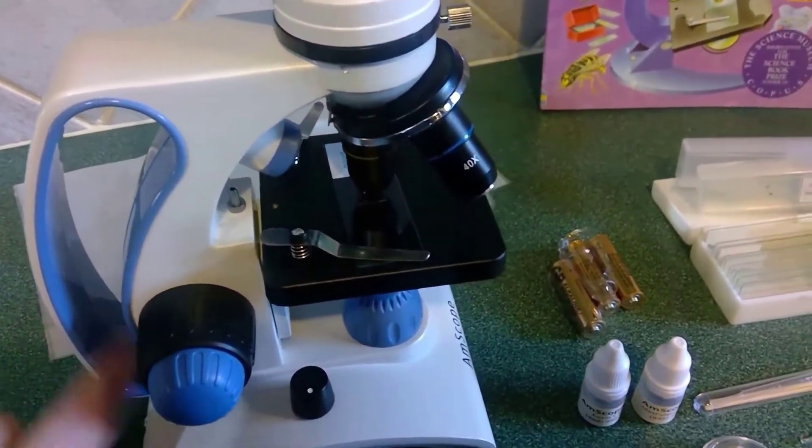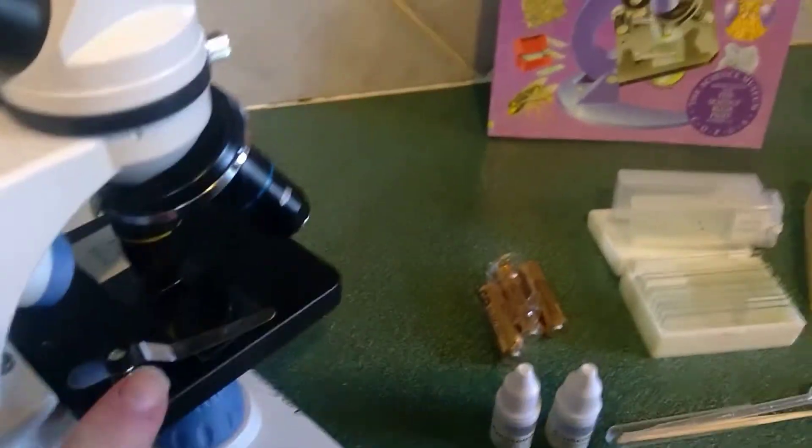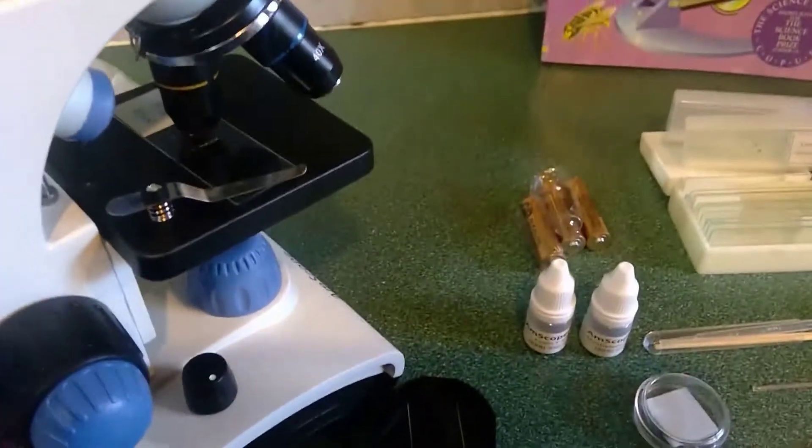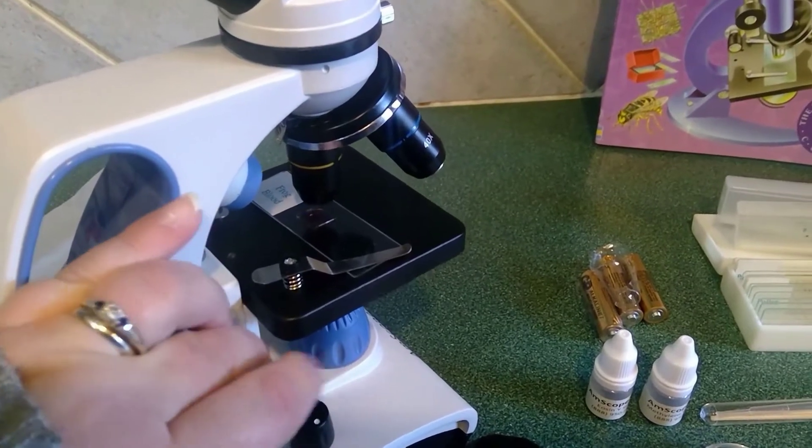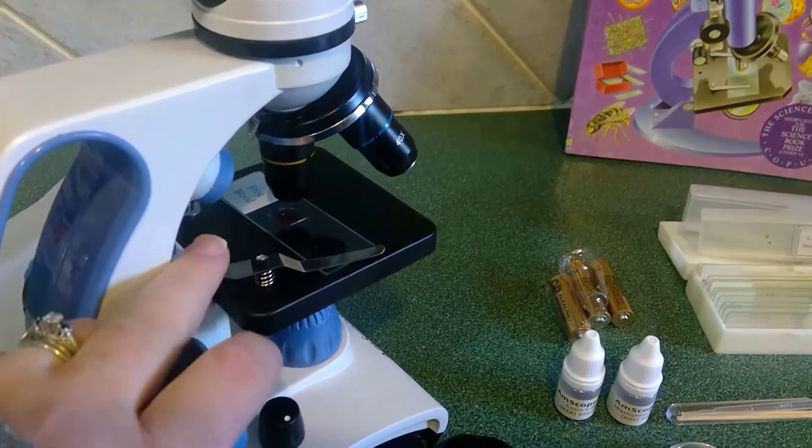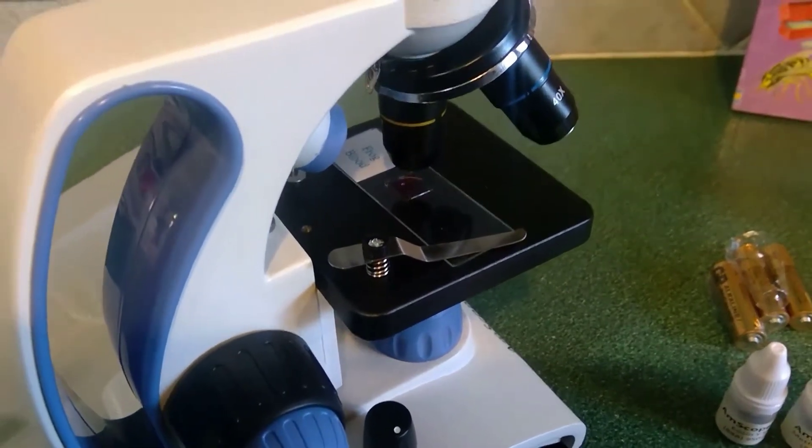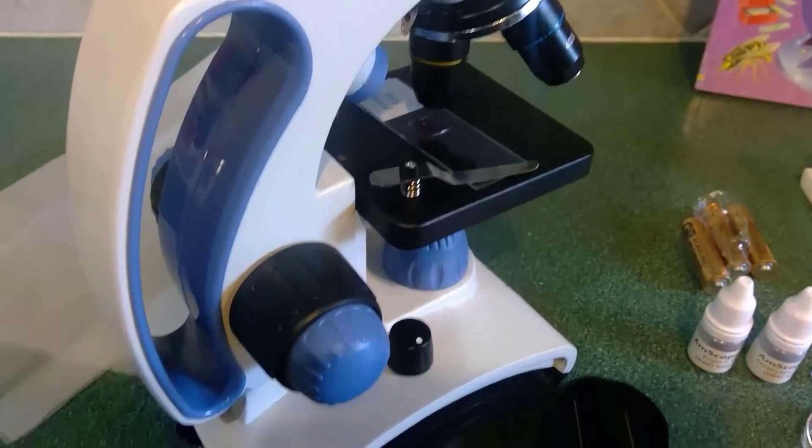It comes with the stage right here that moves up and down. It's got the prongs so that you can hold the slide. Right now, it's actually got frog blood on there. They got a kick out of seeing some of the slides yesterday that came with the microscope, and I'll show those.